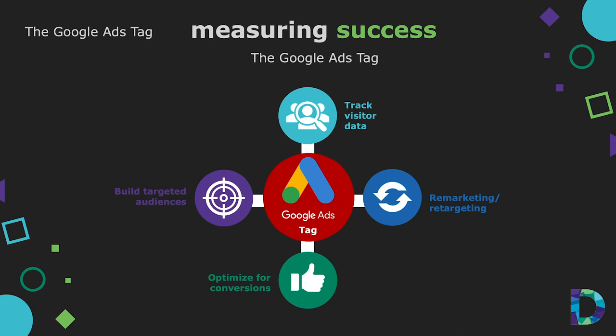We also talked about the Google Ads tag — Google's version of a code snippet that helps with overall site measurement, tracking conversions, and remarketing campaigns. All-in-one hosted solutions like Squarespace, Wix, and Shopify provide tools to incorporate both your Facebook Pixel and your Google Ads tag.